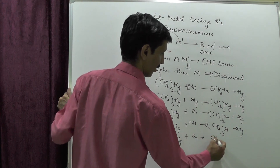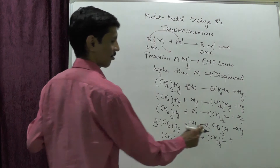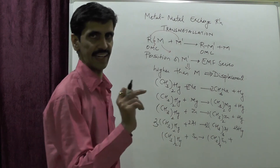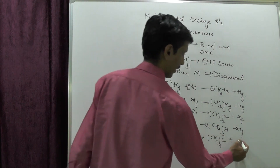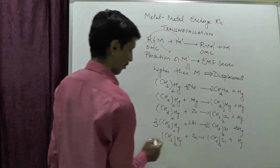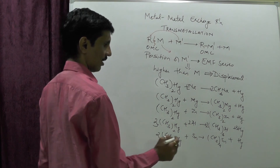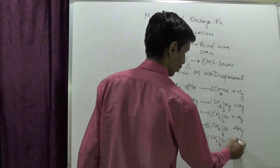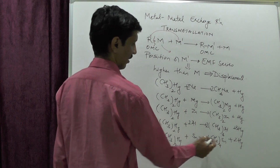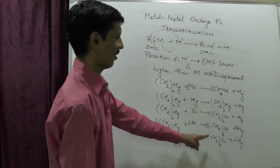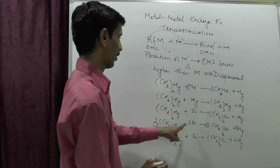For tin in the stannic state (Sn⁴⁺), the compound formed is (CH₃)₄Sn. The balanced reaction: 2(CH₃)₂Hg plus Sn gives (CH₃)₄Sn plus 2 Hg.